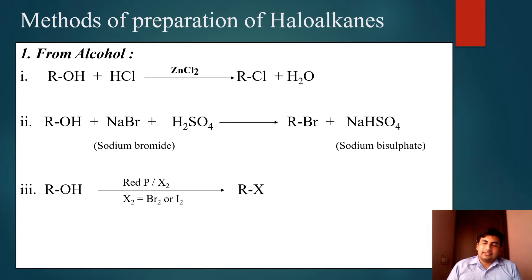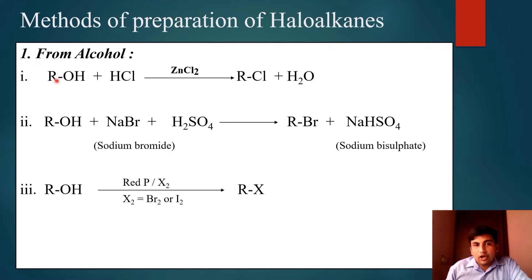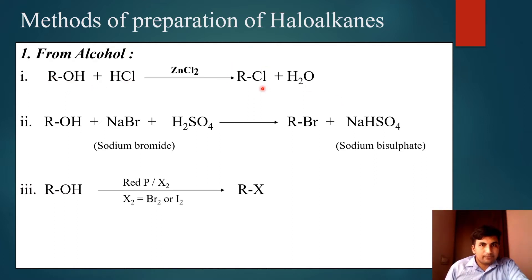Method of preparation of haloalkanes. First method is from alcohol. There are several methods to prepare alkyl halide from alcohol. Alcohol — here I take primary alcohol — is treated with hydrogen chloride (HCl) in the presence of anhydrous zinc chloride (ZnCl₂). Cl displaces the OH group, alkyl chloride is formed, and HOH combines to give H₂O. This is the method to prepare alkyl chloride from alcohol.